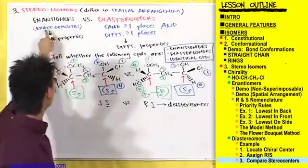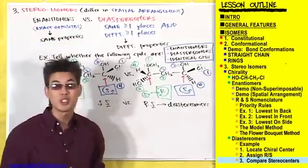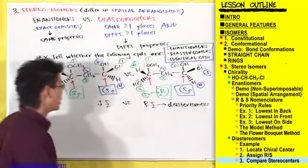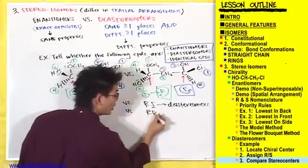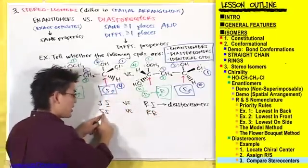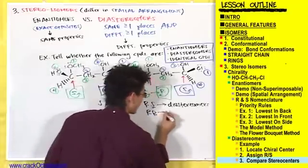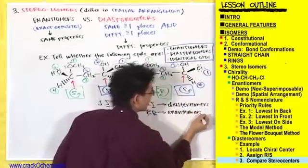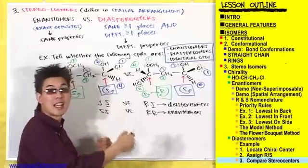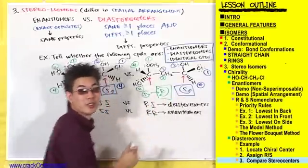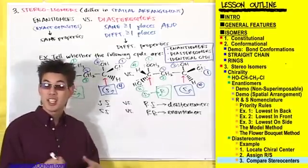If compounds are exact opposites — if they have opposite orientations at every single stereocenter — then they are considered enantiomers. For example, if this had been SS versus RR, they're exact opposites at every center, so they'd be considered enantiomers. But that's not the case in this example — this was SS versus RS, same at one place and different at another, so they were diastereomers.